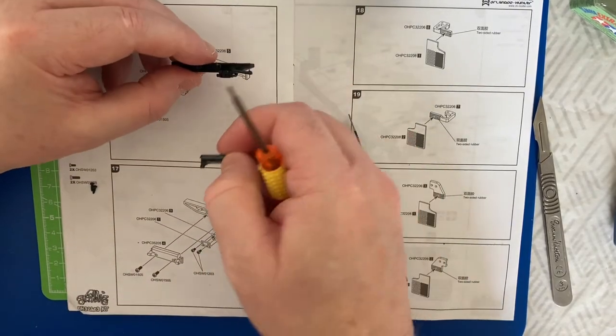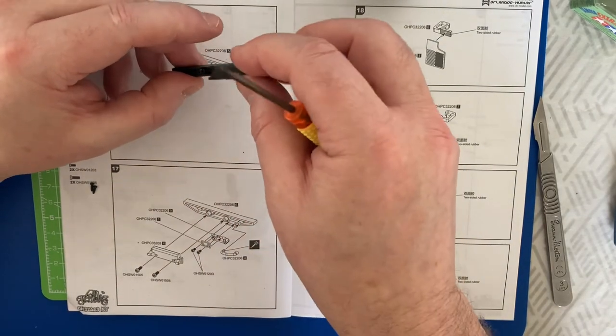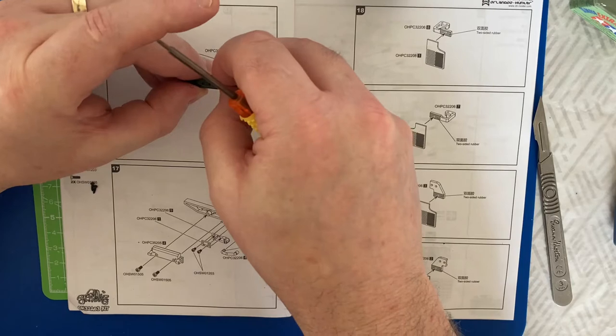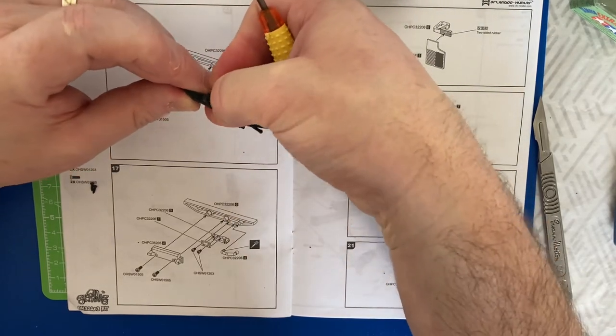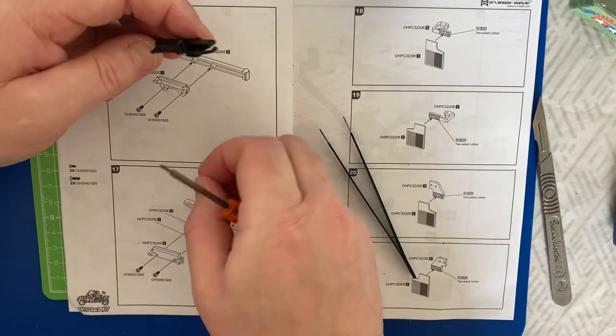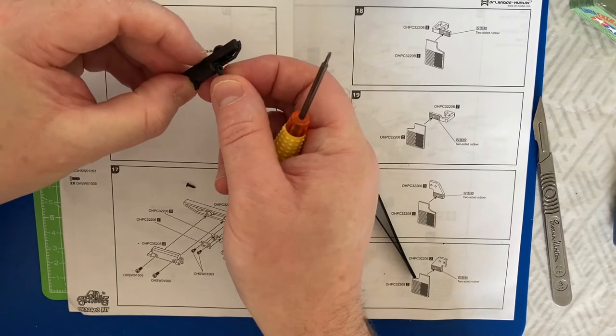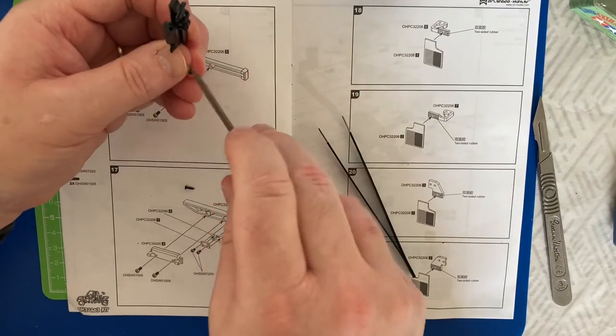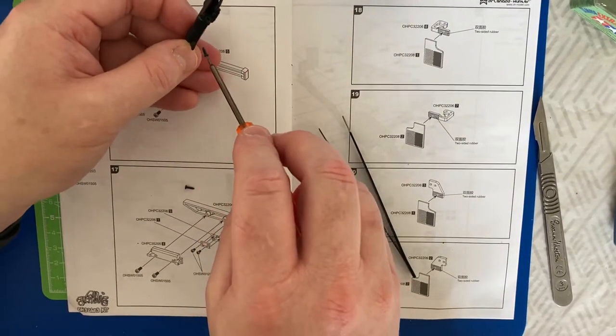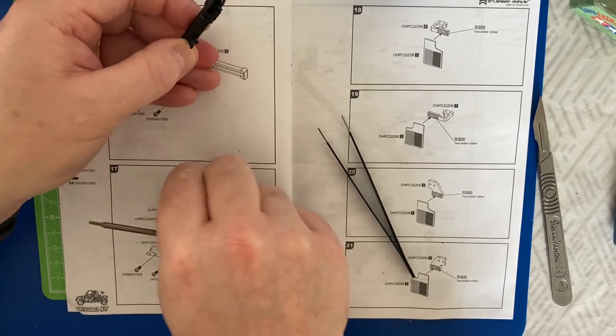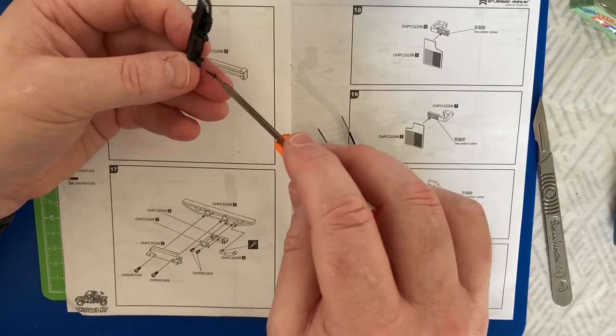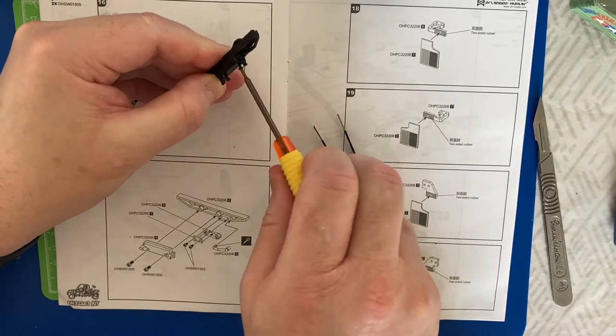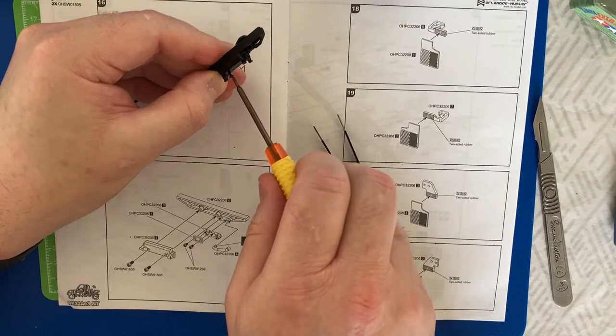And then OHPC 35205 part number four. That goes over these two shrouds and locates. And then a couple of 1505 screws to screw those in place. You can see how this wonderful little kit takes the time and really does test your patience. But it's a great kit. It's coming together really well. And the parts and the plastic parts are really good quality.